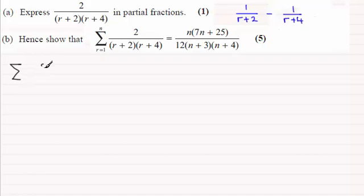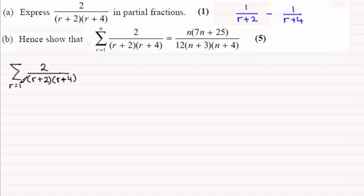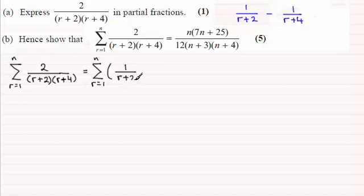So what we've got here is the fraction — let's just copy it down. We've got 2 over (r plus 2)(r plus 4), and this is summing from r going from 1 to n. We found out in part A that we could split this into two partial fractions. So this is exactly the same as doing the sum of r going from 1 to n of 1 over r plus 2 minus 1 over r plus 4.